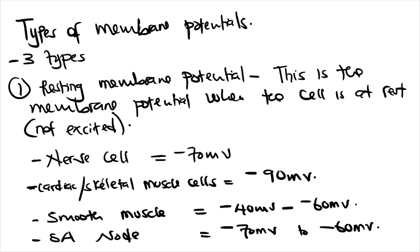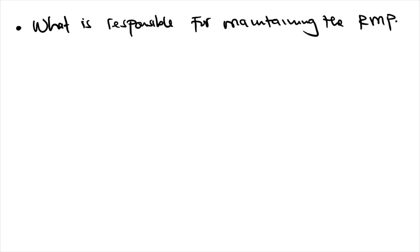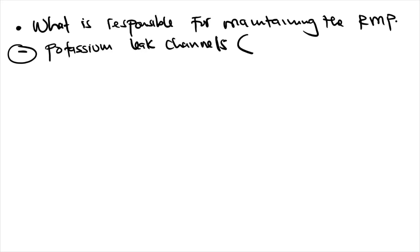What is responsible for maintaining the resting membrane potential? It is primarily the potassium leaky channels. The potassium leaky channels are most implicated in maintaining the resting membrane potential.